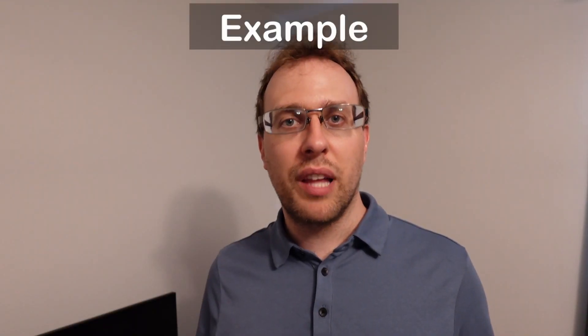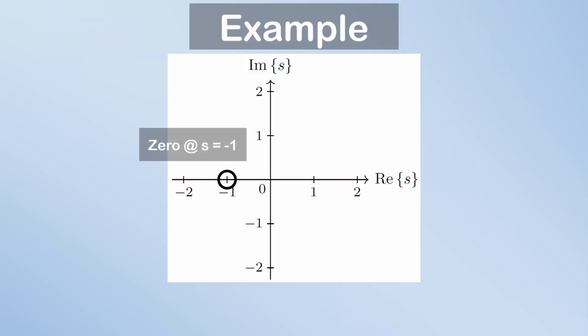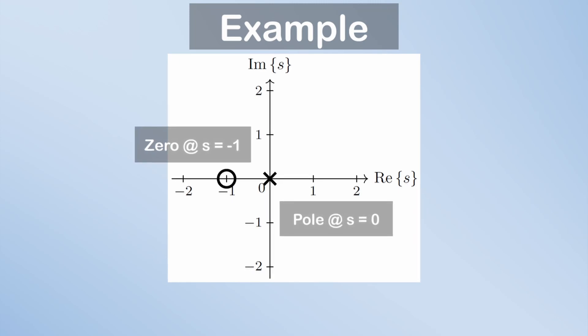You can also plot these in the complex S domain. The zero is drawn as a small circle, and the pole is drawn as a small x. Here, the pole and the zero are both real, so they will both be drawn on the real S-axis.